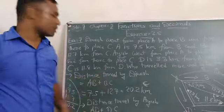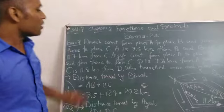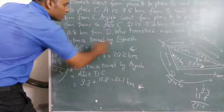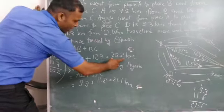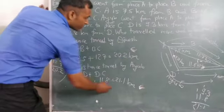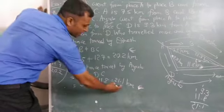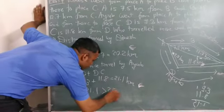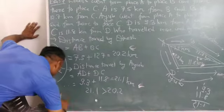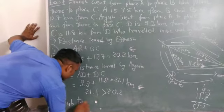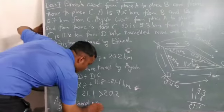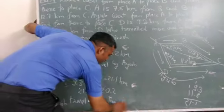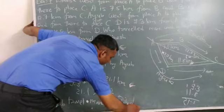So we find the total distance traveled by Dinesh and Ayub. Now our question is, who traveled more? Distance traveled by Dinesh is 20.2 and by Ayub is 21.1. Which is greater? 21.1 is greater than 20.2. So now, Ayub travels more than Dinesh.